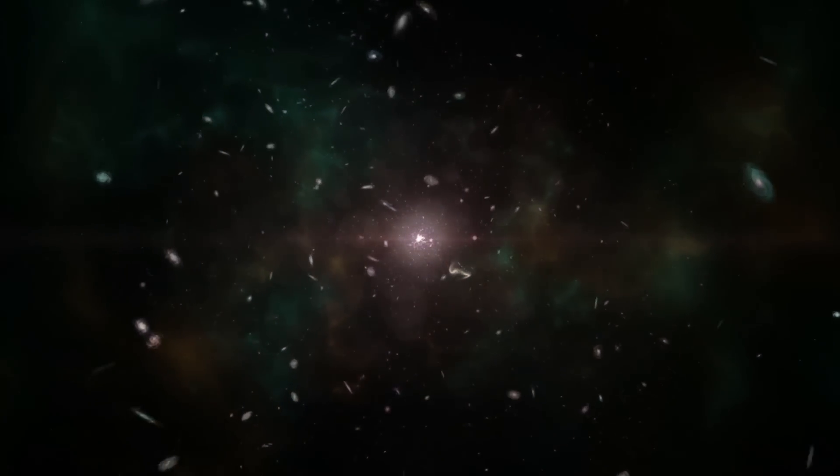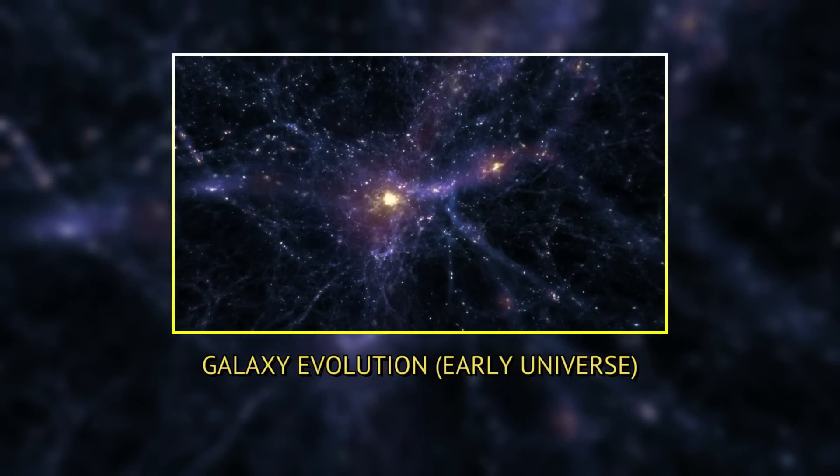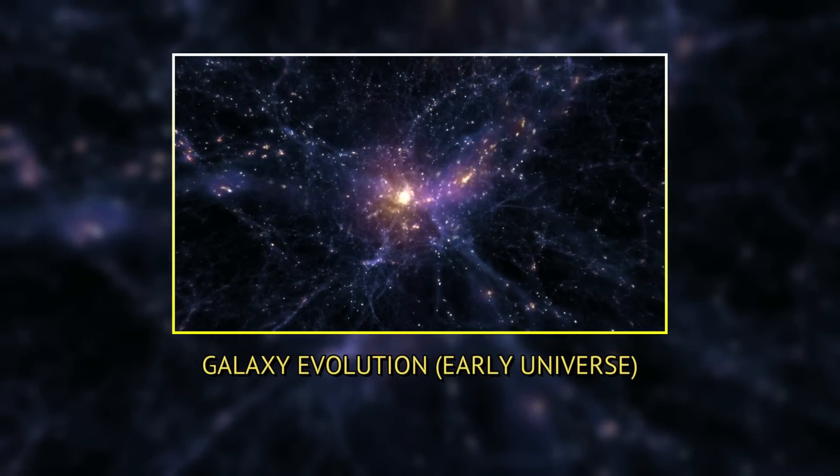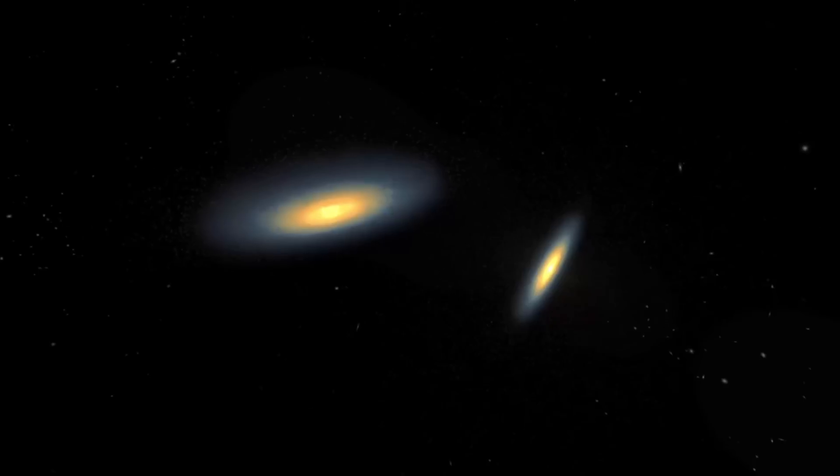According to the Standard Model, at some point around 200 to 500 million years after the Big Bang, the earliest generations of stars and galaxies began to appear, attracted to the foam-like dark matter filaments that had already begun to cluster throughout the universe.